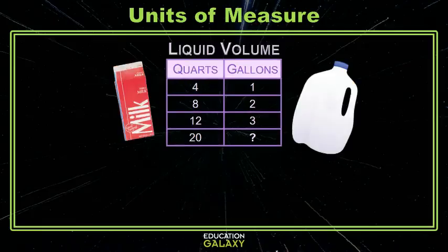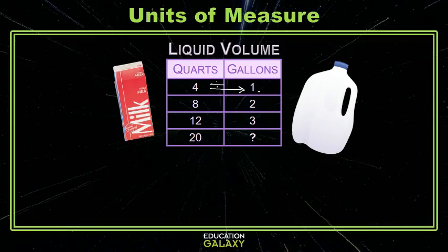Let's try one for volume. You're familiar with milk — maybe you've seen a quart of milk and a gallon of milk. The gallon's bigger, so we're going from the smaller unit to this bigger unit. If you said divide, you are correct. We are given that there are 4 quarts in one gallon, so we divide by 4. 20 divided by 4 is 5, so there are 5 gallons in 20 quarts.